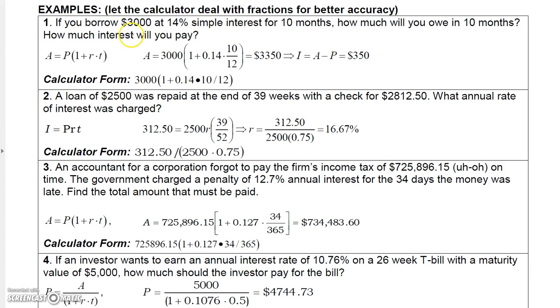I'll finish up by working two or three of these problems here. The first one is pretty straightforward. You borrow $3,000, 14% simple interest for 10 months. How much will you owe in 10 months? So we can use A equal P times 1 plus RT. The principal is 3,000. The rate is 0.14. The time in years is 10 twelfths. So P times 1 plus RT. Put that in your calculator. You get $3,350.